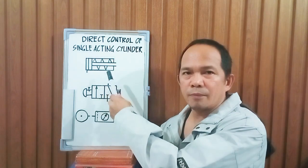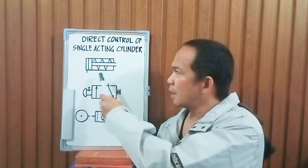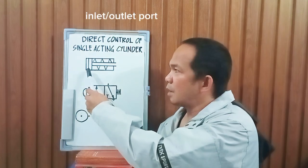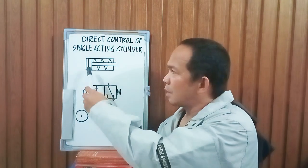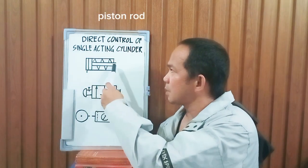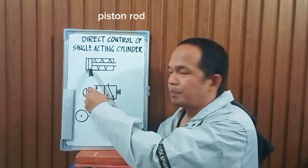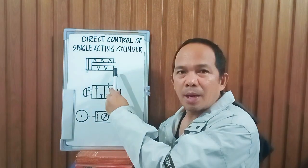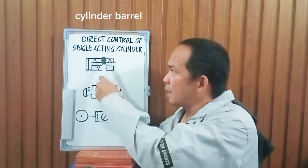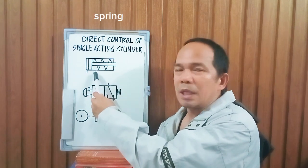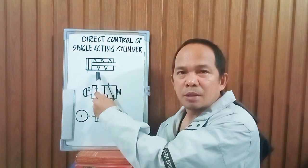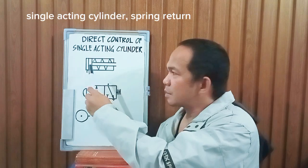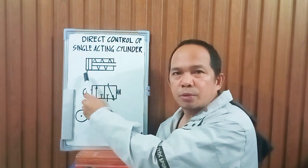What are the parts of a single-acting cylinder? It has an input-output port and then it has a piston rod. This is the piston rod and this is the piston. We have here the cylinder barrel and then the spring. So this is a single-acting cylinder spring return — it has only one input-output port.